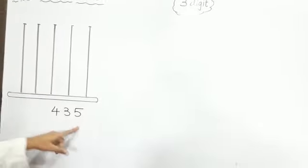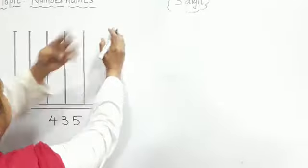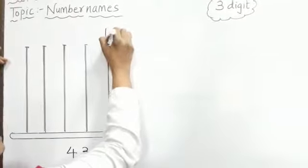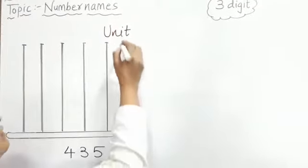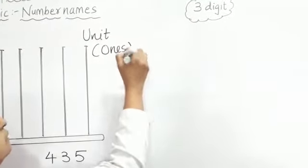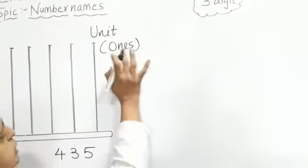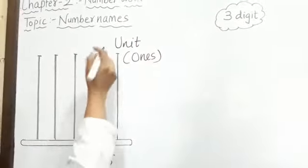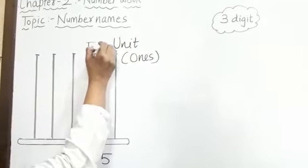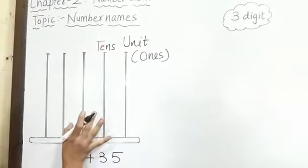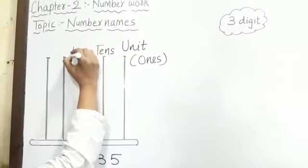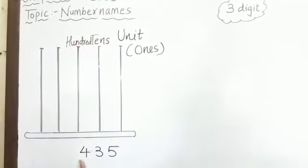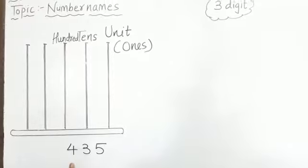435 is the number. We will move from last level to first level. The last level is the unit place — unit means ones. Next level is tens, and the next level is hundreds. Now, how will you write the number in words?